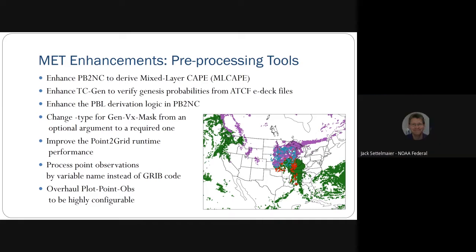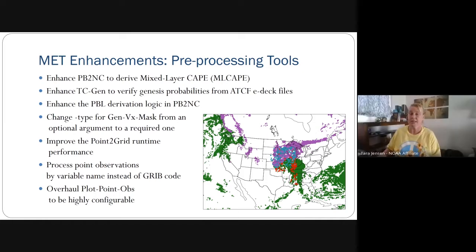Jack asked about the list of derivations for PB2NC. In the PB2NC configuration file, there are a list of variables that begin with 'D underscore' — those are the variables that can be derived; that's what the D stands for. While waiting for Tara to come back on, the presenter offered to go to GitHub to show what that looks like.